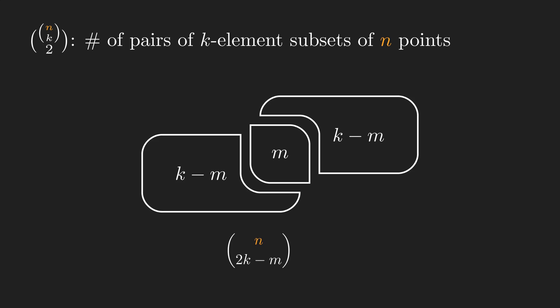Out of these, there are n points that are shared. From the remaining two k-2m points, we pick k-m for the first subset, and from the remaining k-m, we need to pick k-m points. There's only one way to do the last step, so I'm not writing it. As we discussed before, the result should be divided by 2. To make this quantity equal to n choose k choose 2, we should sum over all possible values of m.